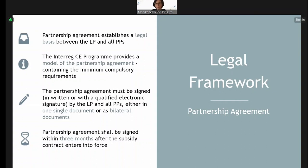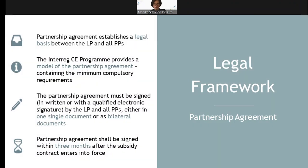There are two options for the signature: it could be either one document signed by the whole partnership, or bilateral documents signed between the lead partner and each individual partner. There is also a time frame for the signature of the partnership agreement — it needs to be signed within three months after the subsidy contract between the lead partner and the managing authority has entered into force, meaning three months after the counter-signature by the managing authority.